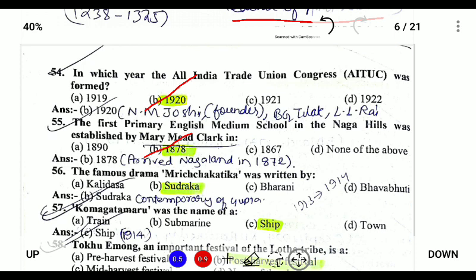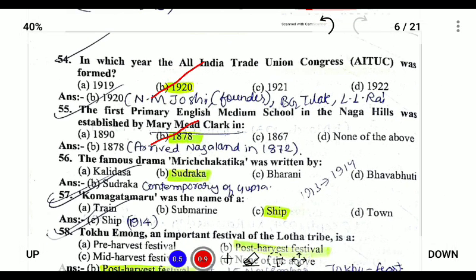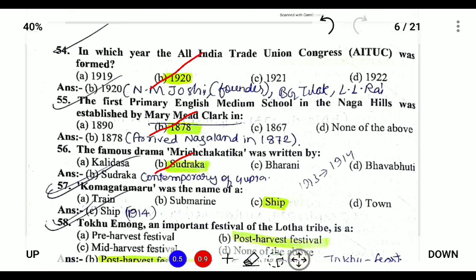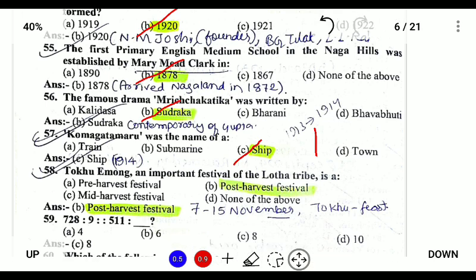The famous drama Mricchakatika was written by Shudraka. It was a contemporary of the Gupta dynasty. The Komagata Maru was a ship that was very popular during the First World War. It was traveling from Singapore to Vancouver when an incident occurred, known as the Komagata Maru Incident. The ship's name is Japanese.